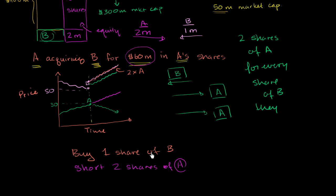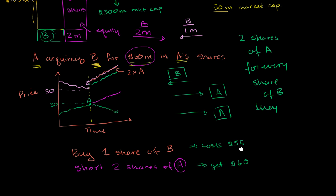When you short 2 shares of A — let's say we're at the point right on the day everything was announced — you're going to get $60. Shorting means you borrow the stock, sell it, and you'll have to buy it back at some future date, so you owe someone 2 shares of A. When you buy 1 share of B, it's not trading at $60 — it's trading at a discount, say $55. So you've netted $60 minus $55, which is $5.